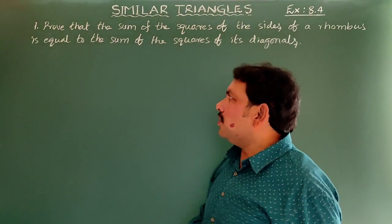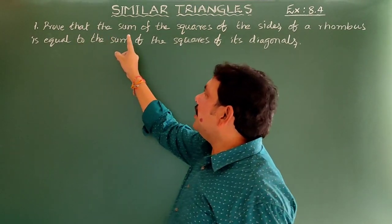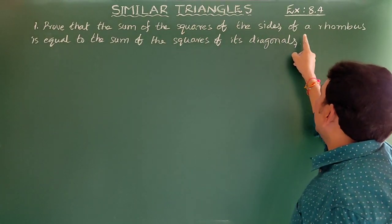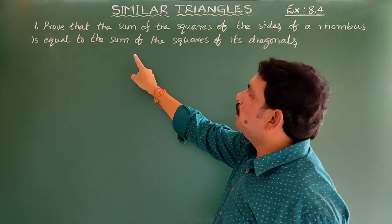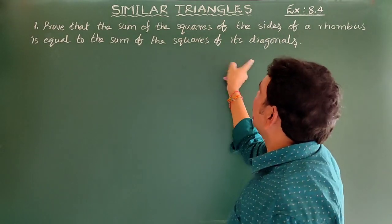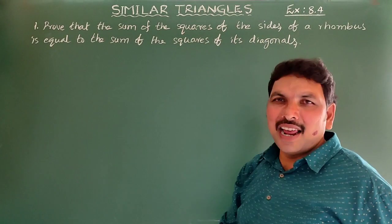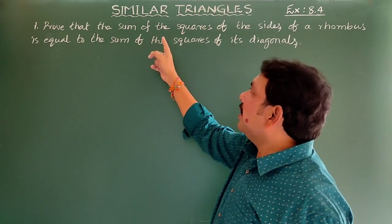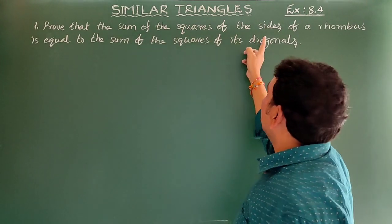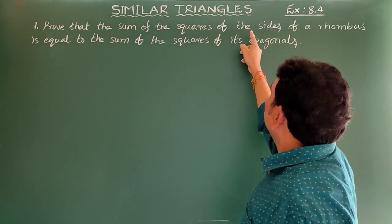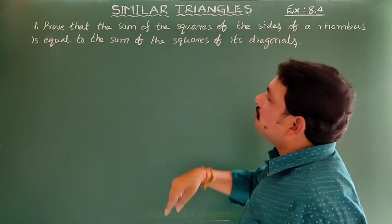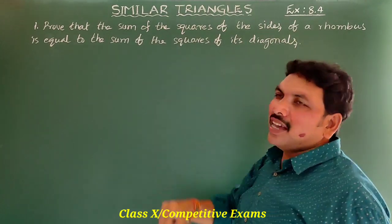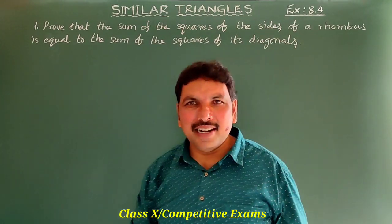Let us go to the first one. Prove that the sum of the squares of the sides of a rhombus is equal to the sum of the squares of its diagonals.